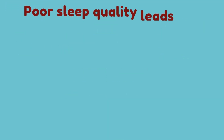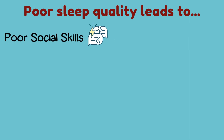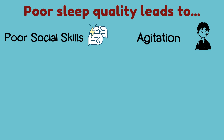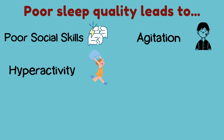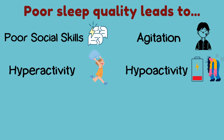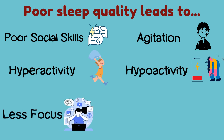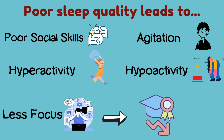Many studies have been conducted that showcase that autistic individuals who have little sleep experience magnified symptoms of the disorder. Their social skills are severely poor, they are more prone to agitation, experience high levels of repetitive behavior, and are more hyperactive or have very little energy, and are also much more easily distracted. They tend to lose focus quicker, leading to poor educational performance.